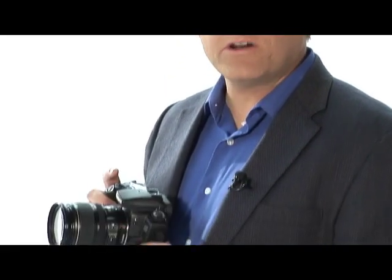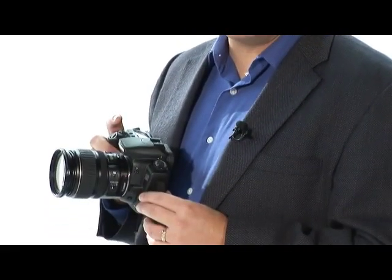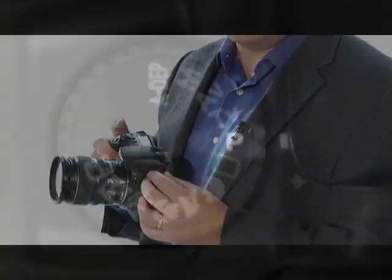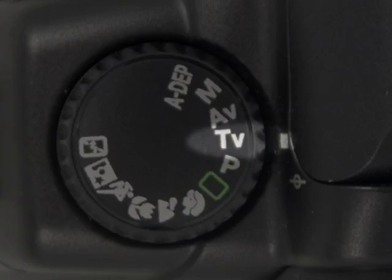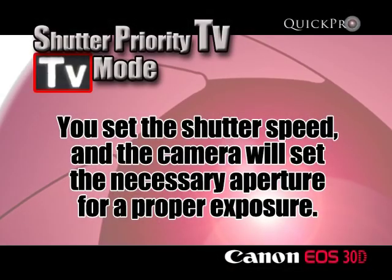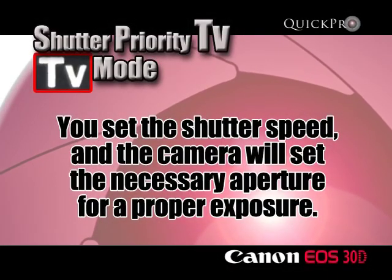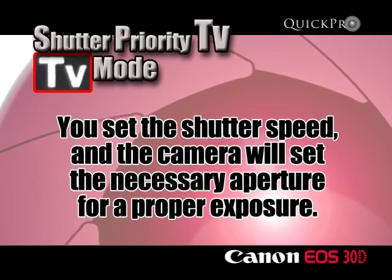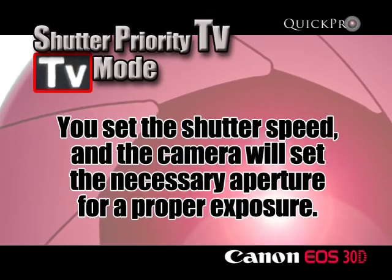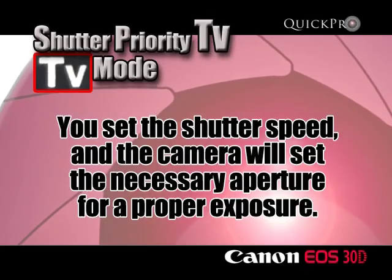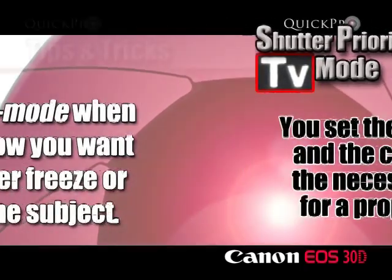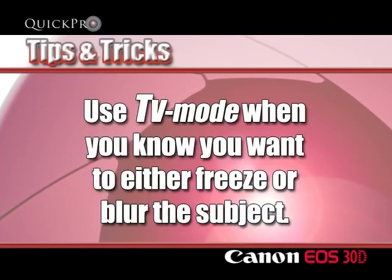The next Creative Zone setting is Shutter Priority or TV mode. Use this to set the shutter speed yourself and let the camera calculate the aperture needed to make proper exposure. This is very handy when you know you want to either freeze or blur the motion of your subject.